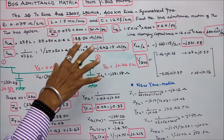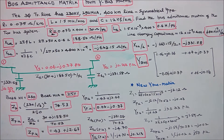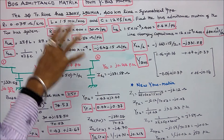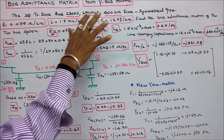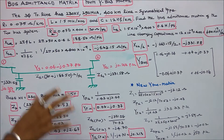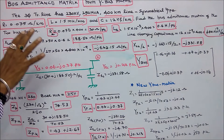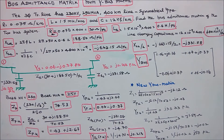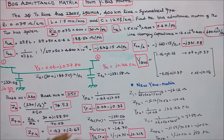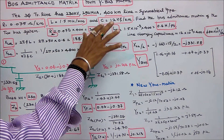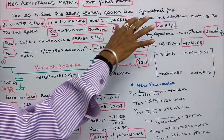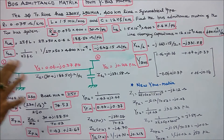In this class we work out one problem on bus admittance matrix. A three-phase transmission line has 230 kV, 250 MVA, 400 km, symmetrical type. Resistance is equal to 0.075 ohm per kilometer, inductance L is equal to 1.5 mH per kilometer, line charging capacitance is equal to 12 nF per kilometer. Find the bus admittance matrix for the two-bus system.